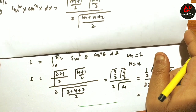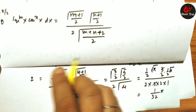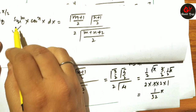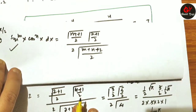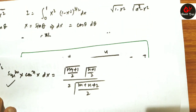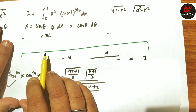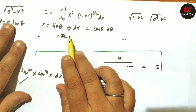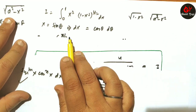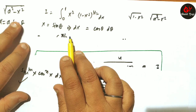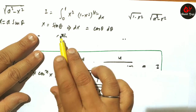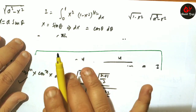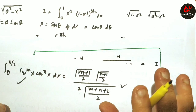To summarize: whenever you see an integral involving √(a² - x²), apply the substitution x = a sinθ. This simplifies the expression and then you can use the Gamma function formula to evaluate it.